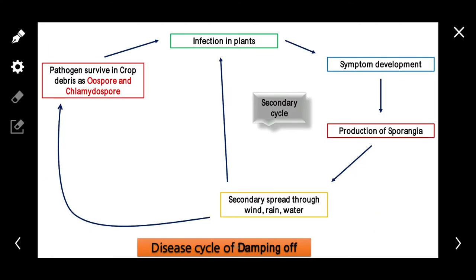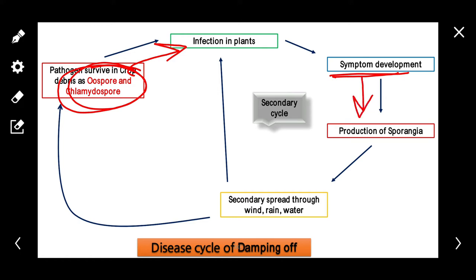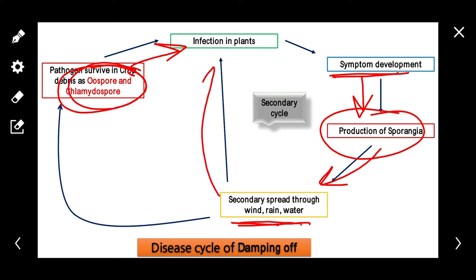The pathogen survives in crop debris as oospores and chlamydospores. It then infects the plant and causes symptoms either pre-emergence or post-emergence. It multiplies by taking nutrition from the plant and produces sporangia. Sporangia also produce zoospores and are spread through wind, rain, and irrigation water. They reach other fields or plants and cause disease. This cycle is known as the secondary infection cycle.